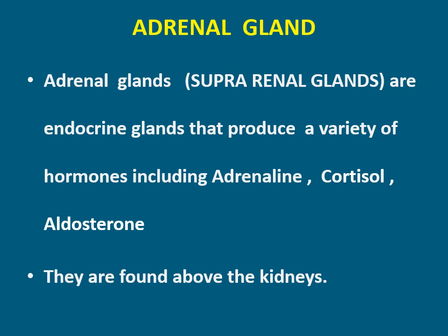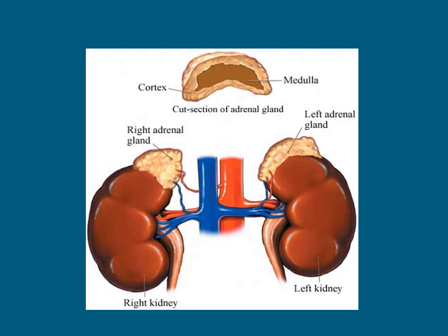Adrenal glands, also known as suprarenal glands, are endocrine glands that produce a variety of hormones including adrenaline, cortisol, and aldosterone. Adrenal glands are found above the kidneys. This is the cut section of the adrenal gland. These are the kidneys — right kidney and left side kidney. The adrenal gland is located above the kidney; this is the right side adrenal gland and this is the left side adrenal gland.